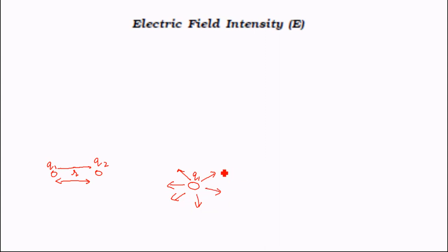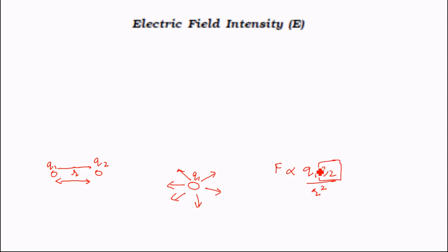We can say that force is proportional to Q1 times Q2 divided by R squared. Here we are not taking into account the charge of the other particle; we are just considering the influence of this particle. But obviously that influence will be a function of the charge of the particle which will come into this region.